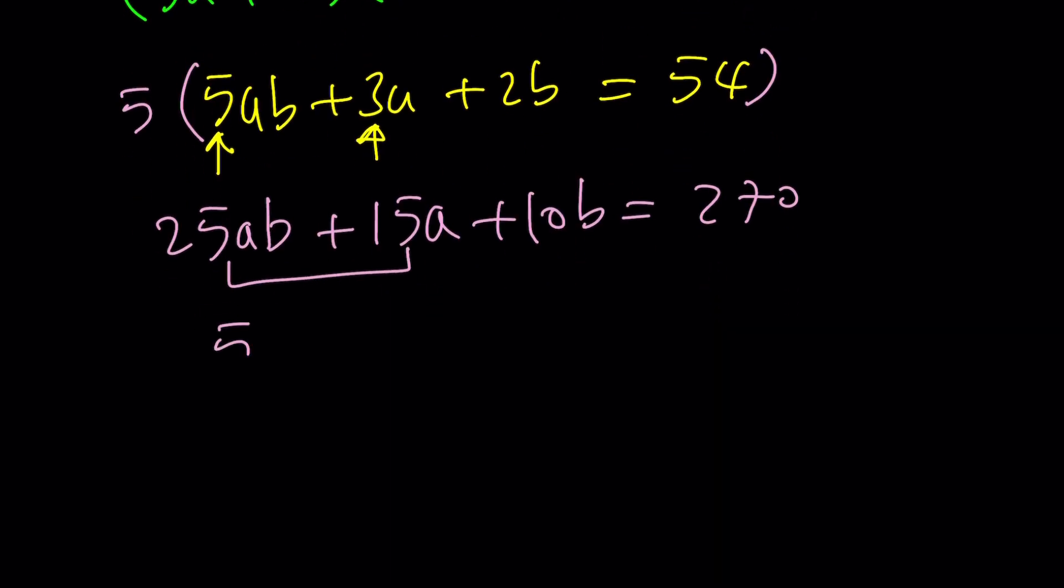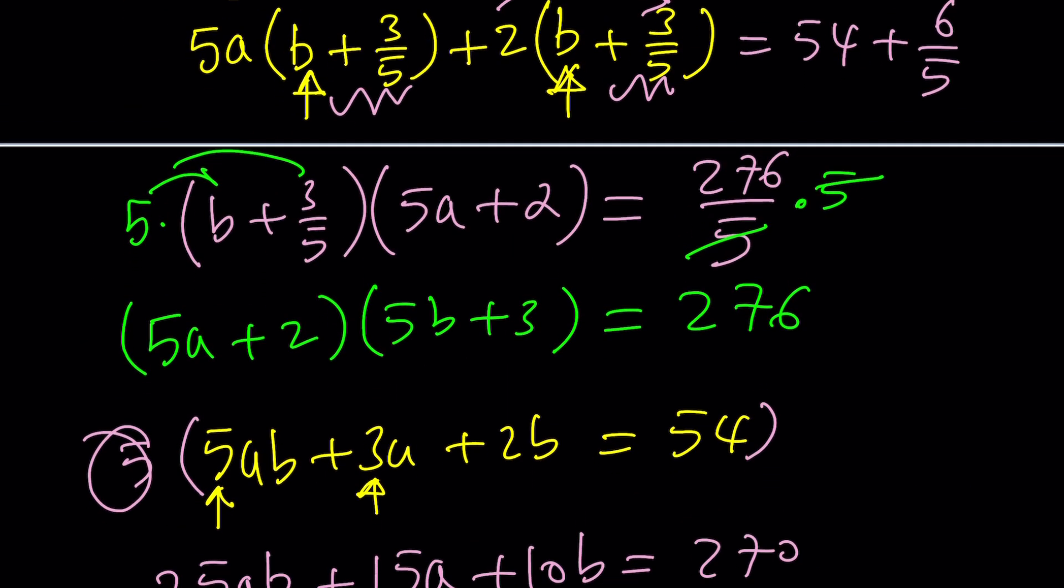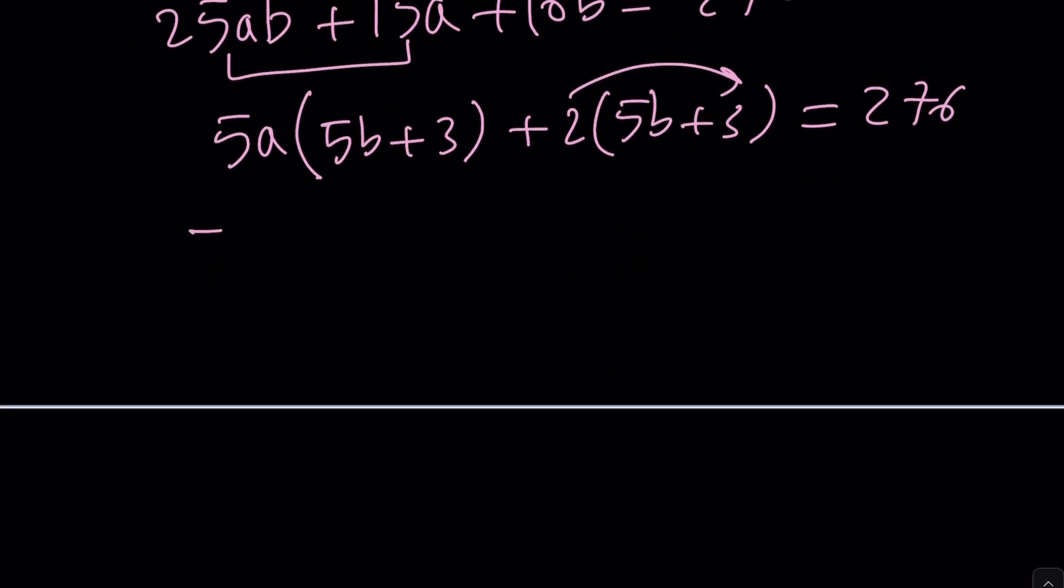we're going to factor out a 5a easily because we already multiply. Everything is good to go. Now we're going to get 5b + 3 and this will just be 2 times 5b. So now we're going to add 3 to both sides, which means adding 6 to both sides and then it'll be the exact same thing, which is probably a little easier. You don't have to deal with fractions because you multiply by 5 beforehand. But we end up with the exact same equation, which is 5a + 2 multiplied by 5b + 3. And that's equal to 276.